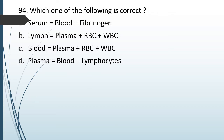Question No. 94: Which one of the following is correct? Serum is blood plus fibrinogen; lymph is plasma plus RBC plus WBC; blood equals plasma plus RBC plus WBC; or plasma equals blood minus lymphocytes? The correct answer is Option C: blood is equal to plasma plus WBCs plus RBCs.